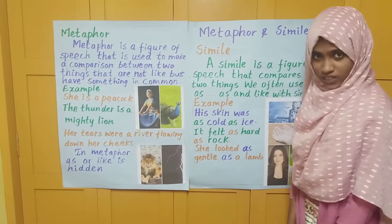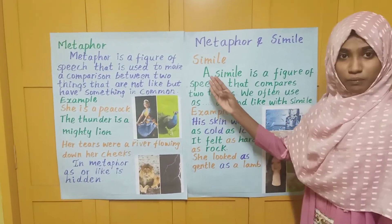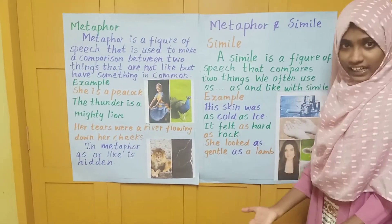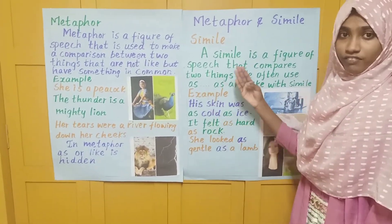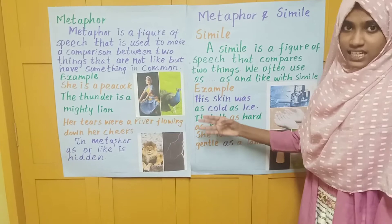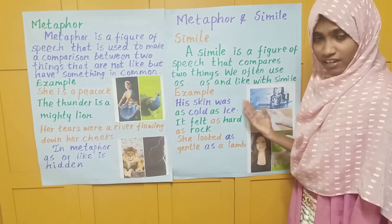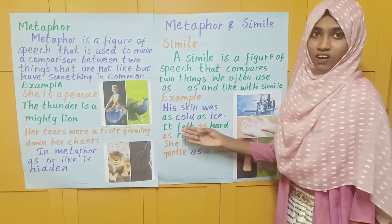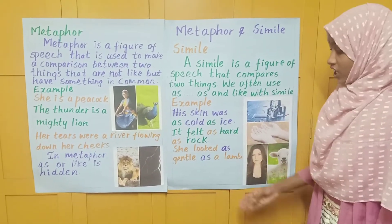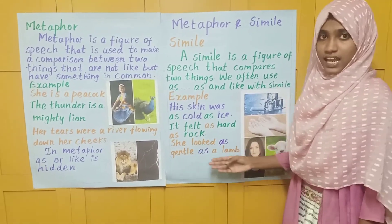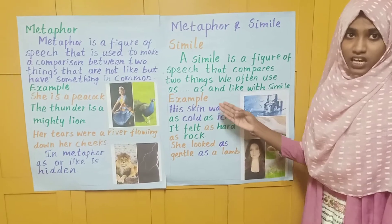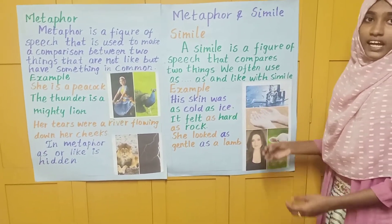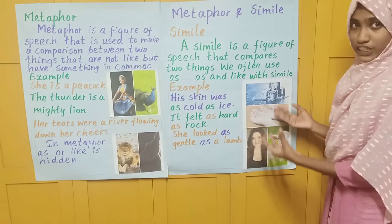First we are going to see about simile. A simile is a figure of speech that compares two different things directly. We often use the words as-as and like with simile. For example, it felt as hard as a rock. She looked as gentle as a lamb. His skin was as cold as ice. In this example, they are comparing human skin with ice cubes.